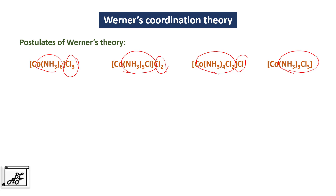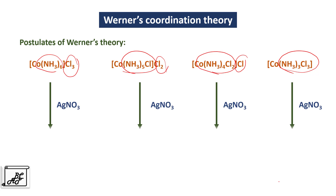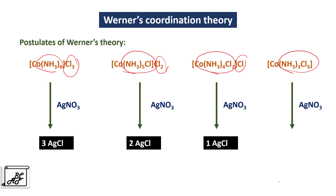In all these cases the central metal atom is associated with 6 ligands with octahedral coordination. The question arises: how to find out whether there are 3, 2, 1, or 0 chloride ions outside the square bracket? These compounds are dissolved in water and silver nitrate solution is added. In the first case there will be a precipitate of 3 AgCl molecules; in the second case, 2 AgCl molecules; in the third case, a precipitate of only 1 AgCl molecule; whereas in the last case there will be a clear solution — no AgCl precipitate is formed. This is Werner's coordination theory.